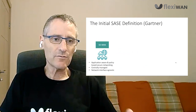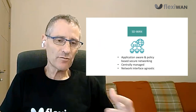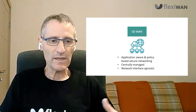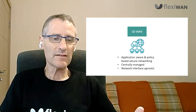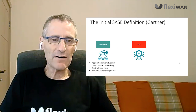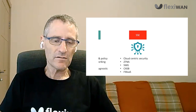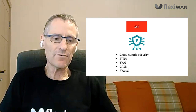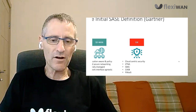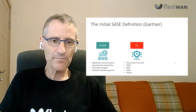Looking at the three elements of SASE, it includes SD-WAN — so all the networking, application-aware policy, and prioritization based on applications. The second part is cloud-delivered security, where all security elements are delivered in the cloud. This includes many technologies shown here: Zero Trust Network Access, Secure Web Gateway, CASB, and Firewall as a Service — all offered in the cloud by one vendor.